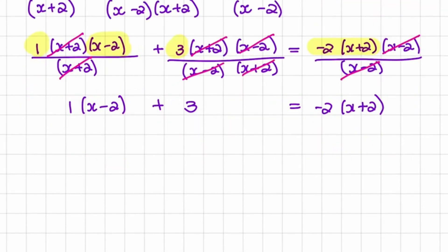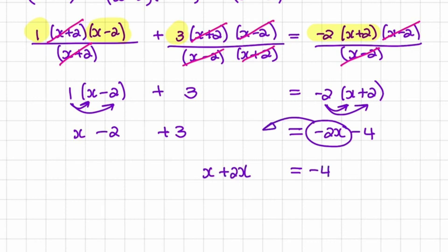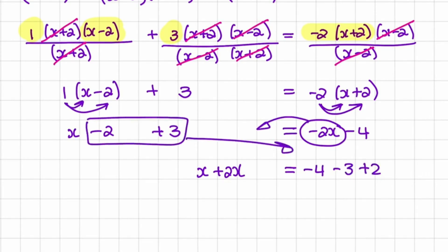Now we can multiply out. So we have 1 times x is x, and 1 times negative 2 is negative 2, plus 3. That is equal to negative 2 times x, which is negative 2x, and negative 2 times positive 2, which is minus 4. So I can move all the x's to the left and all the constant values to the right, giving us x plus 2x, then minus 4 minus 3 plus 2.